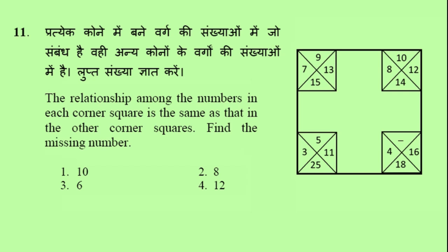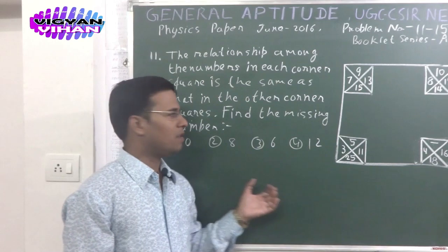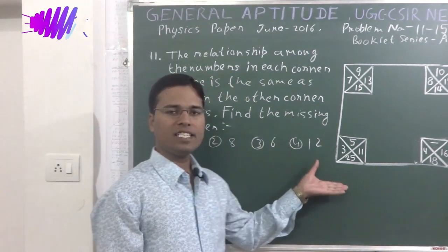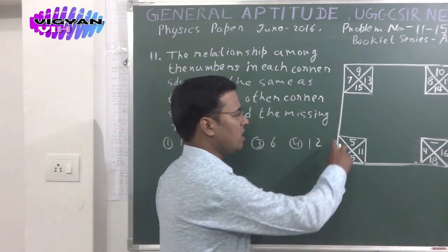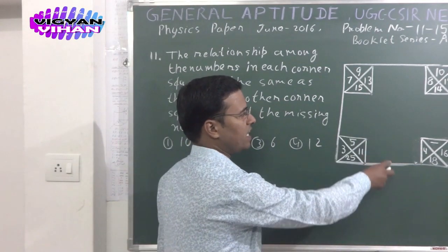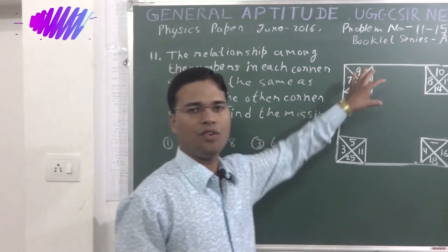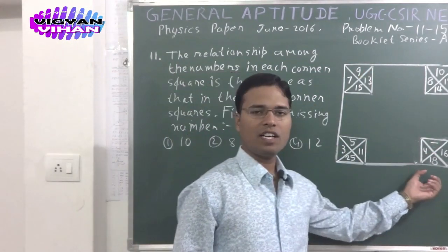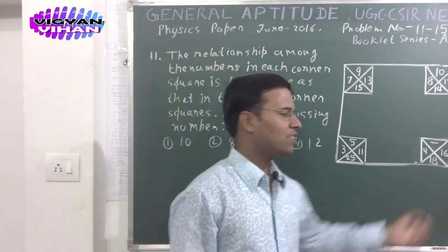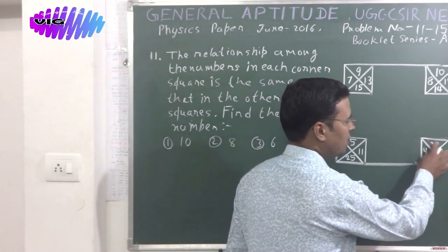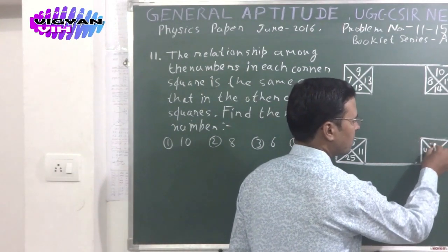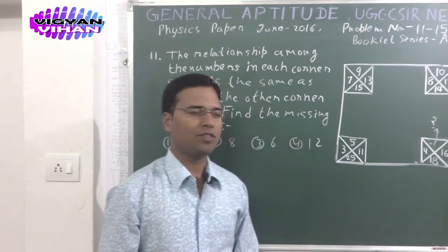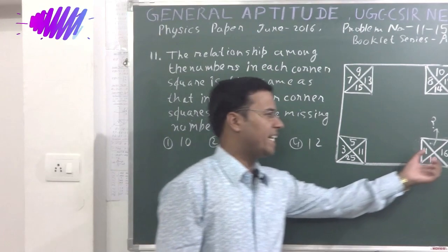Option 1: 10. Option 2: 8. Option 3: 6. Option 4: 12. In this problem there is a big square, and on each of its corners there are 4 small squares. The lower right corner square value is unknown — we will have to find out that quantity.